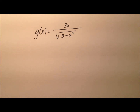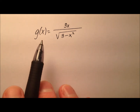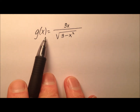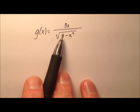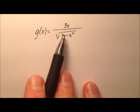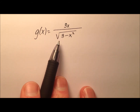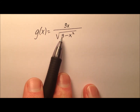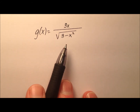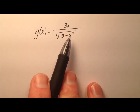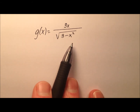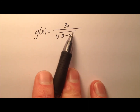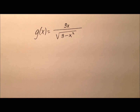In this example, we're going to find the second derivative of the function g, which is given by 3x divided by the square root of 3 minus x squared. It looks like we're going to use the quotient rule, and in doing so we're also going to use the chain rule.